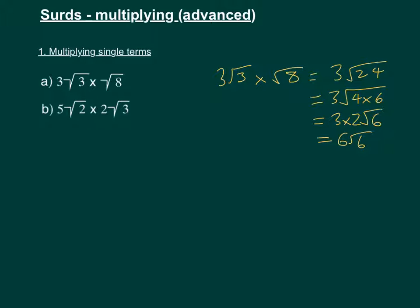And then the second one, same thing, but this time we do have a number in front of the second term. So if we do 5 root 2 times 2 root 3, 2 times 5 is 10. Root 2 times root 3 is root 6. We can't simplify this 6, so we'll just leave it at that.